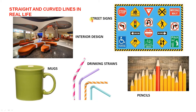We have examples of straight and curved lines in real life — interior design, many buildings. If you have a look at all these different shapes, there are curved and straight lines there. Street signs are a wonderful example; there are so many curved and straight lines. Look at the mugs here — see the curves here and around there.